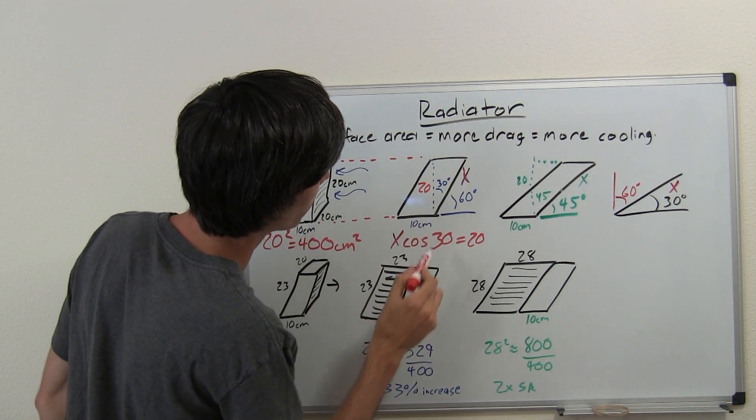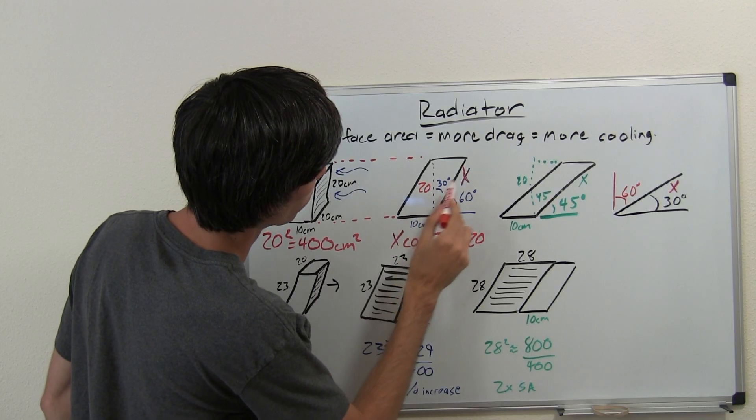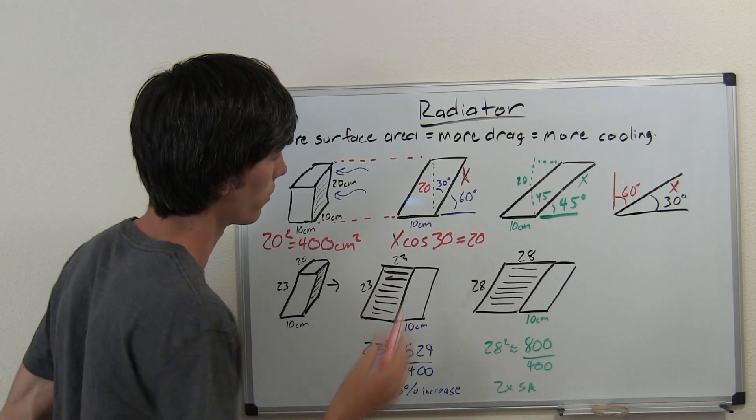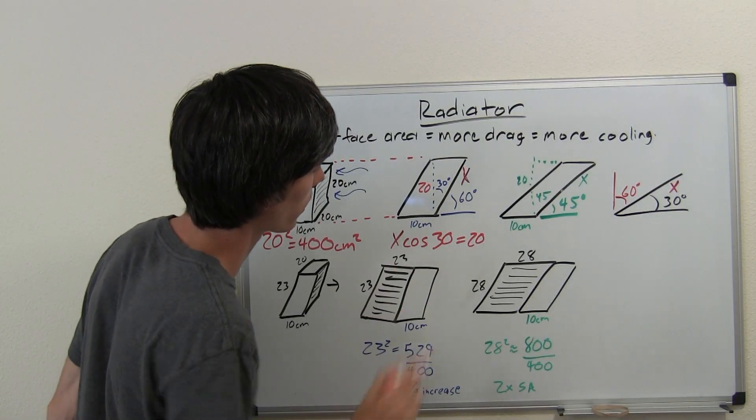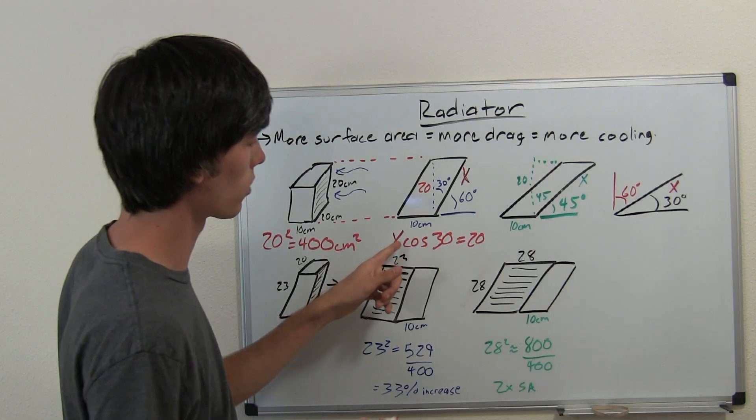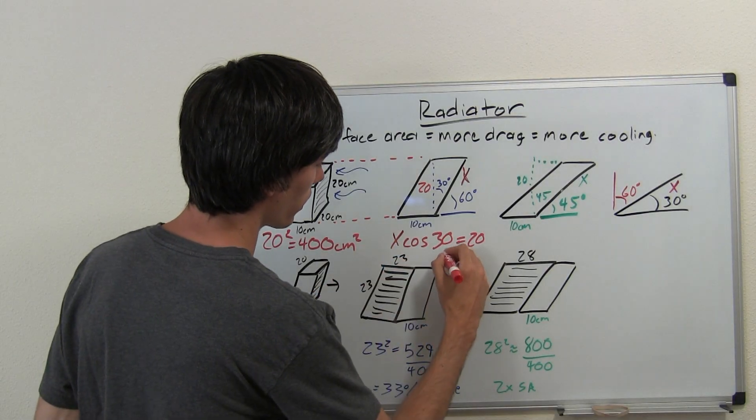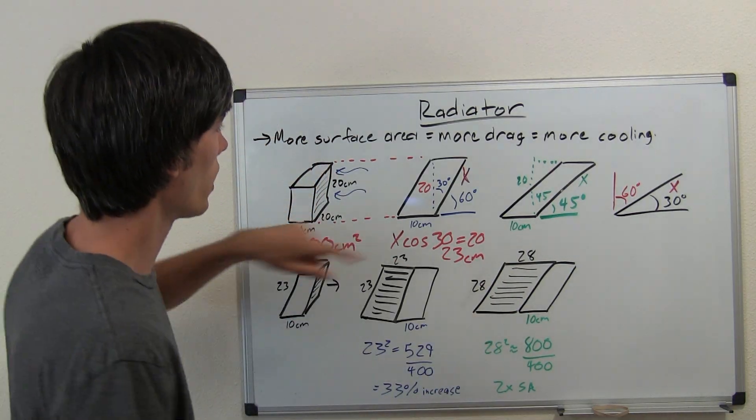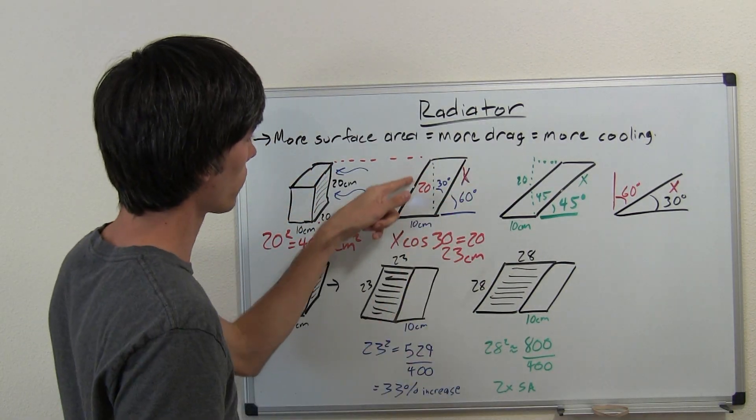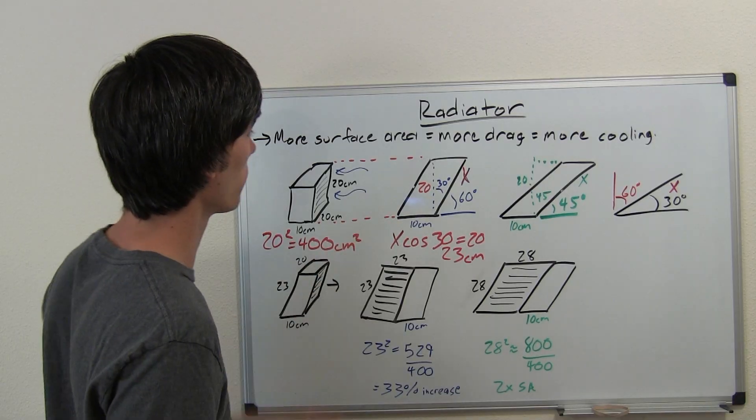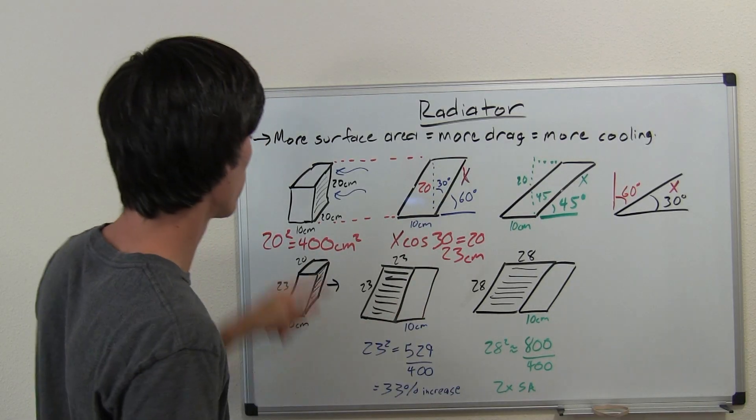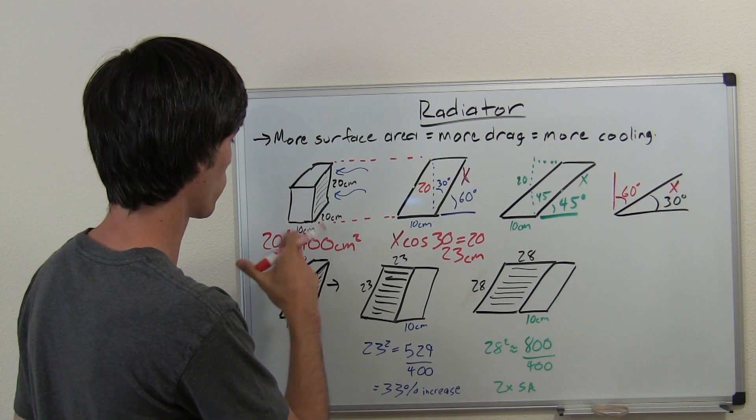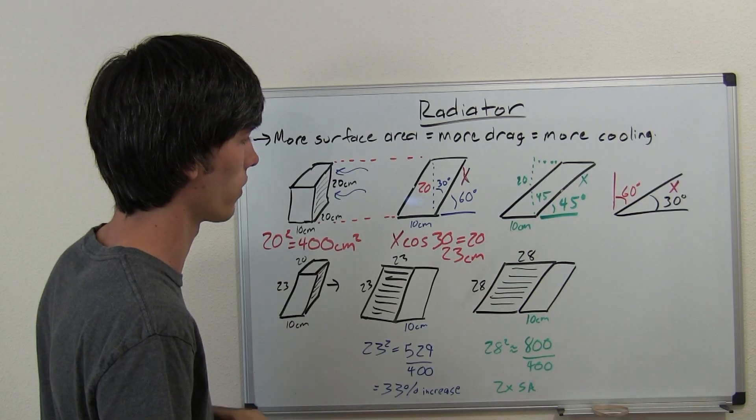So we know that x times cosine of 30 is equal to 20. So SOHCAHTOA, right? One of those basic geometry things you learn. So SOHCAHTOA. So for cosine, adjacent over hypotenuse is equal to the cosine of that angle. So x cosine 30 is equal to 20. So x equals 20 divided by the cosine of 30, which happens to be about 23 cm. Alright. So now we've increased this length here to 23 cm. And so now you've got 23 times 20 rather than 20 squared. So you've got a bigger surface area. You've got an increase there.